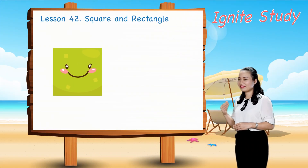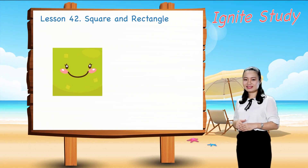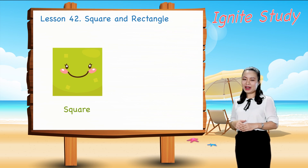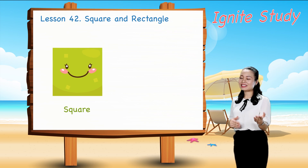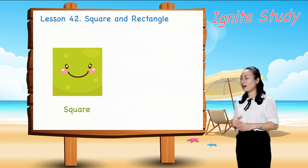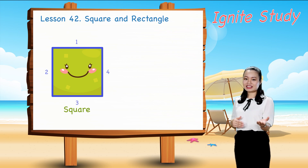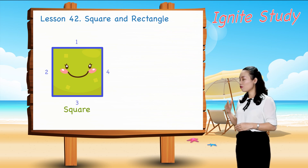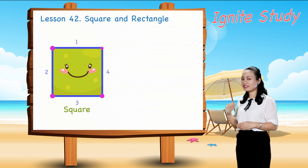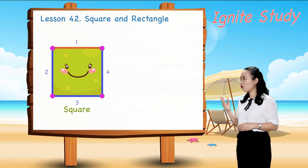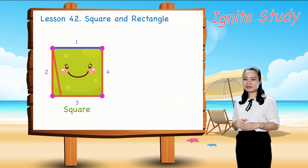Look. This is a square. It has 4 straight sides and 4 corners. All sides are equal.